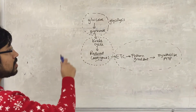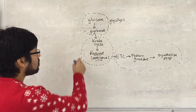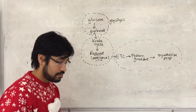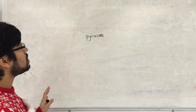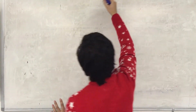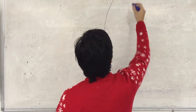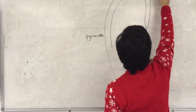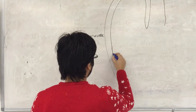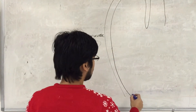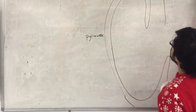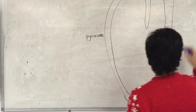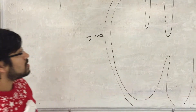So glycolysis, Krebs cycle — this is the story. We're going to be focusing on this now. The next stages we're going to look at are going to be happening in the mitochondria, so just a little bit of navigation for us there.